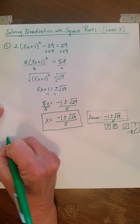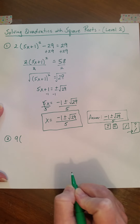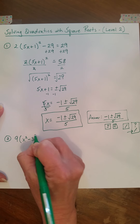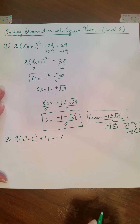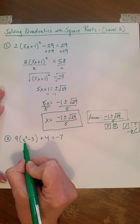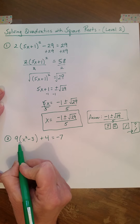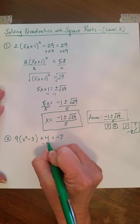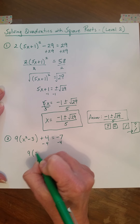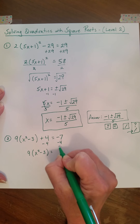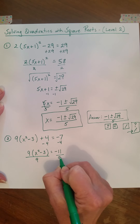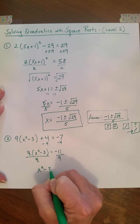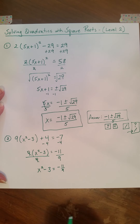Okay, so that's number 1. Number 2: 9 times the quantity x squared minus 3, close parentheses, plus 4 equals negative 7. Okay, again, I always zone in on my variable. My variable is right here. That means I need to get rid of the 4 and then eventually get rid of the 9. First I'm going to subtract 4. So I get 9 times the quantity x squared minus 3, equals negative 11. Now I'm going to divide by 9, and I have x squared minus 3 equals negative 11 ninths. Now I haven't taken a square root yet, so I don't have plus or minus anything.